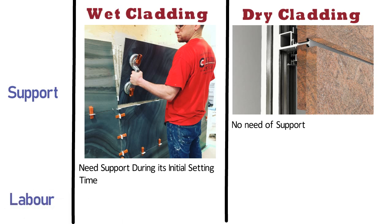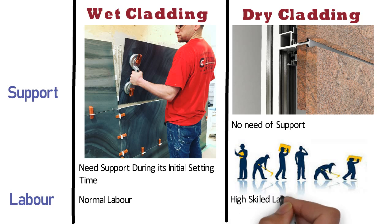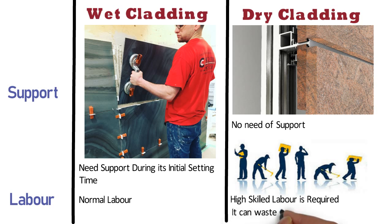Labor: Wet cladding can be done by normal labor and it doesn't require high skilled labor. Whereas in case of dry cladding, high skilled labor is required to drill the holes or notch properly in the tile or stone. If the holes are not drilled properly, then it can waste the material.